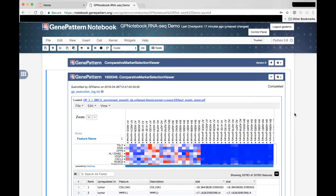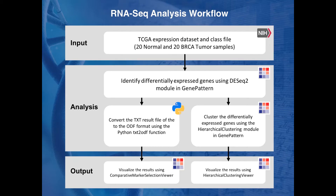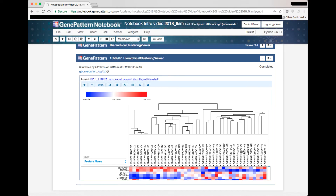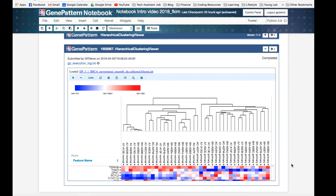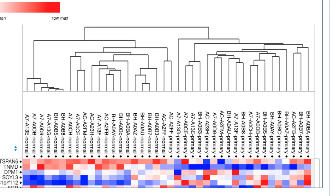Furthermore, in the same notebook, we can use the GenePattern Hierarchical Clustering and Hierarchical Clustering Viewer modules to validate the expected separation of primary tumors and normals into two distinct clusters. We can see that Hierarchical Clustering has clustered all of the samples as expected.